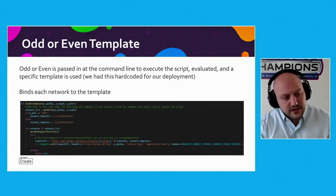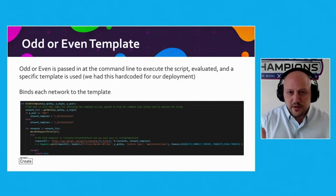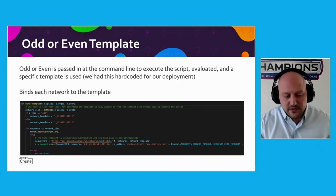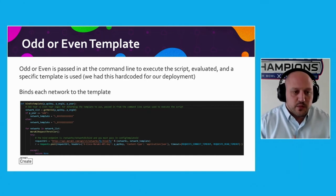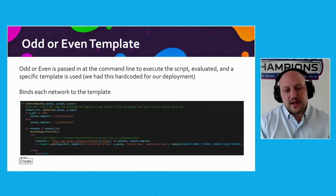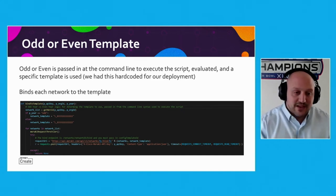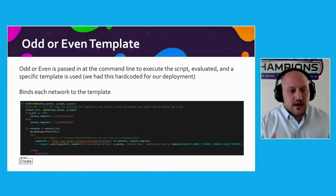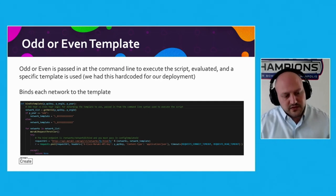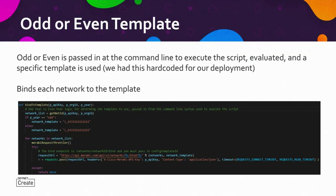If it's an odd or even year — in this case we've hard-coded it, though general best practices say not to hard-code things like this in your code. For a deployment like this you can, though it's obviously not the recommended approach. What we do is pass in whether it's an odd or even year via command line arguments used to execute the script, and then we apply and bind that template. So very similar to before: if it's an odd or even year, we've got our list of networks, we call the Meraki request throttler to make sure we're not overrunning our API limits, and then we go ahead and take the network and bind it to the appropriate template for all the networks. This allows us to have consistency and greatly simplifies the configuration.